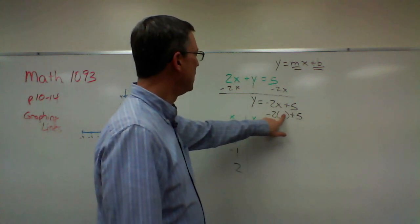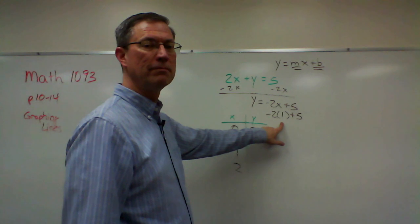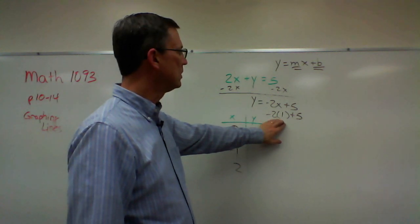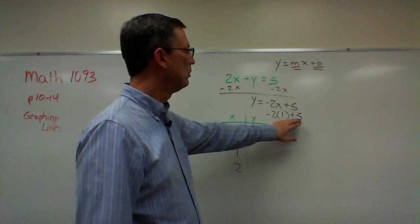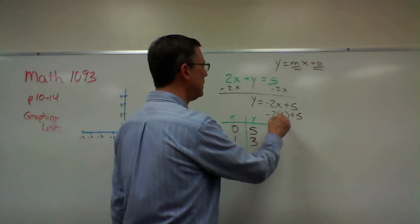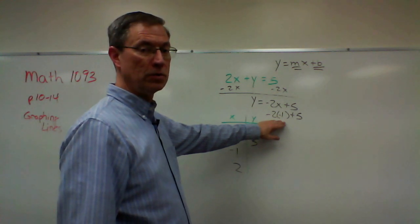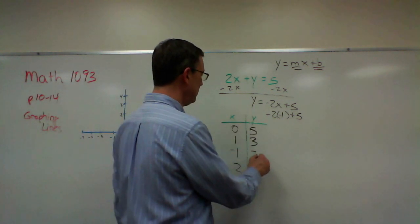What if I plug in 1? What's negative 2 times 1? You do the multiplication first. So we get negative 2 plus 5, which is 3. If I plug in negative 1, that gives me positive 2. Positive 2 plus 5 would be 7.